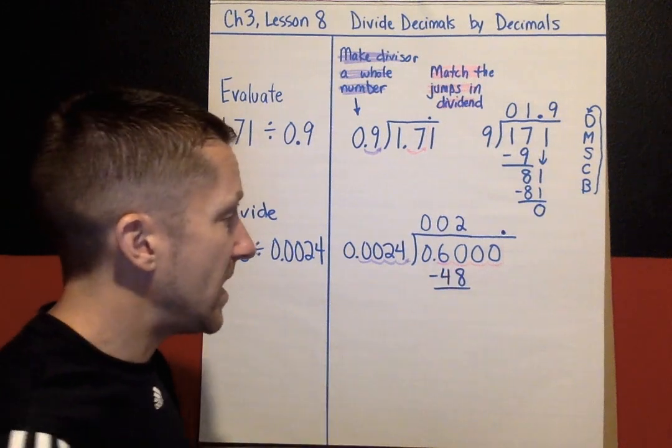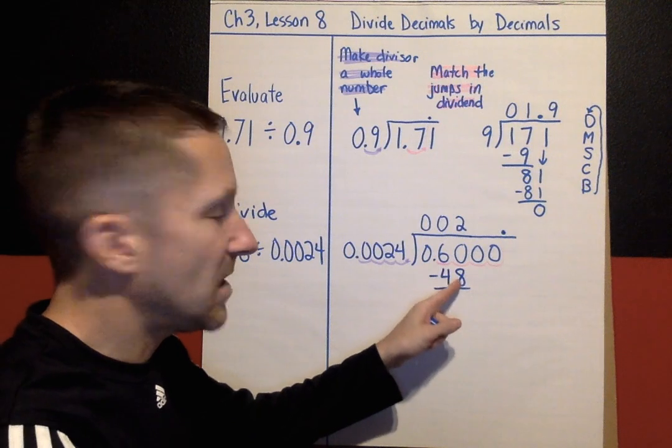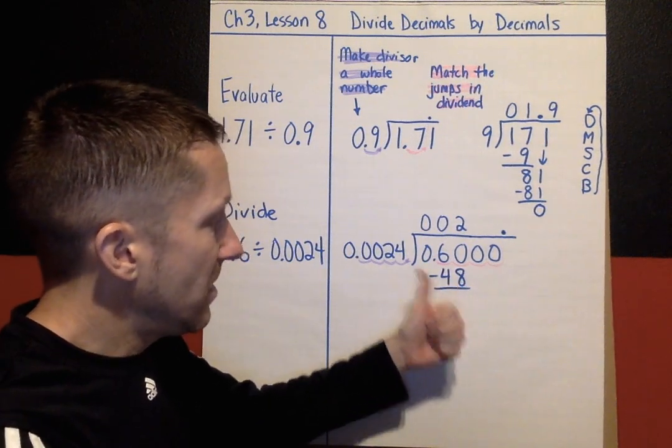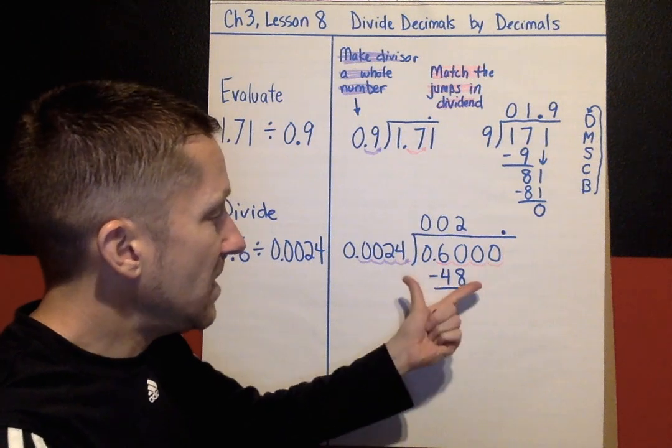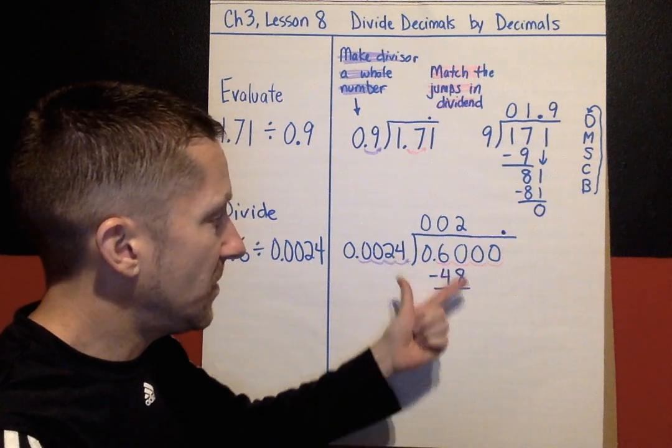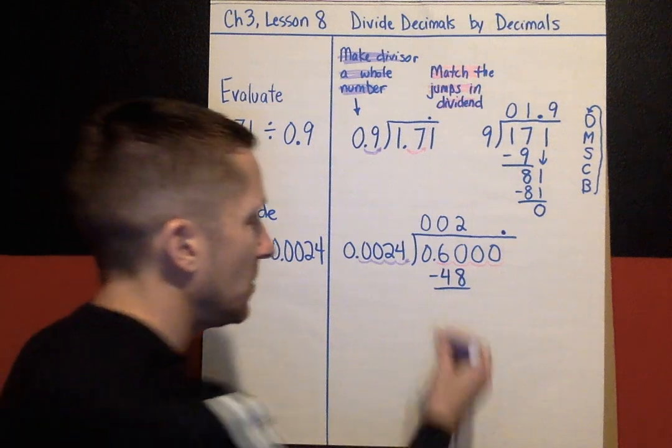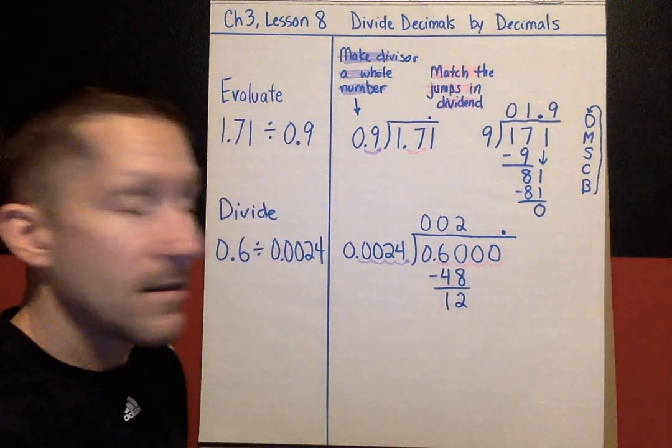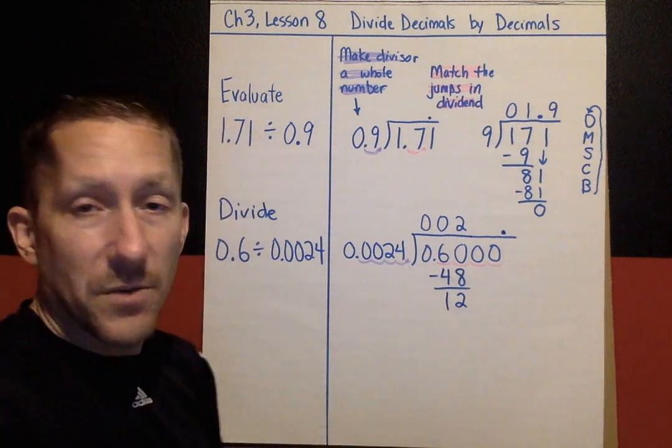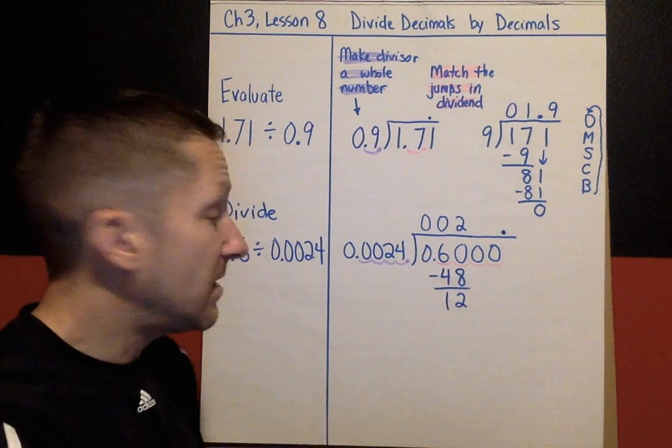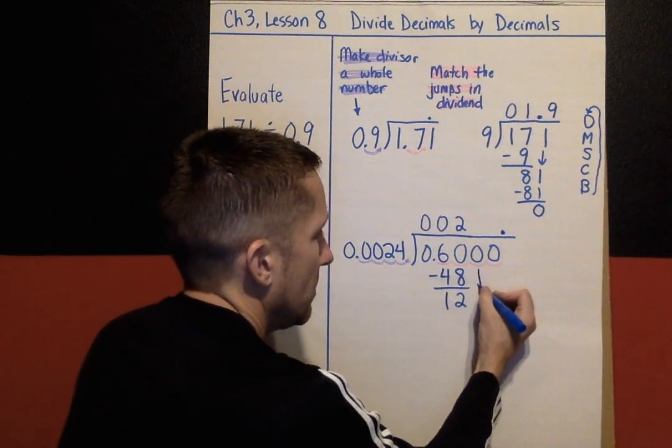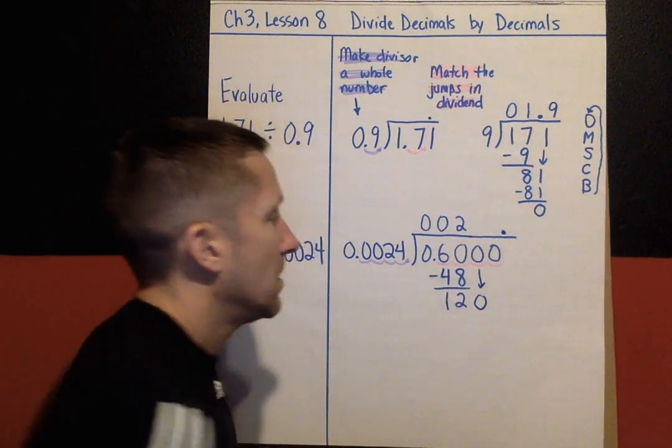Subtract: 60 take away 48. One shortcut I could use is to count up: 48, 49, 50, and then 10 more to get up to 60. So if I subtract those, I have 12. Is 12 smaller than 24? That's the check. The answer is yes. So I can keep going. Bring down the 0.